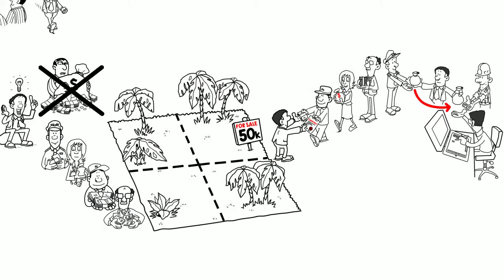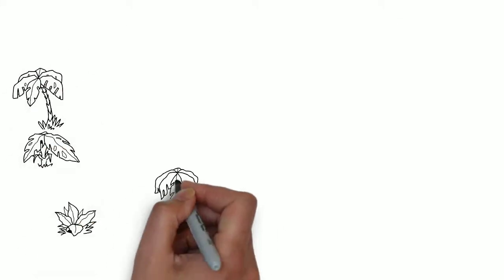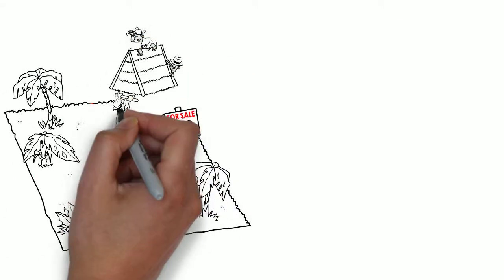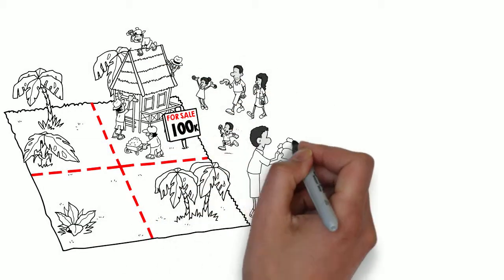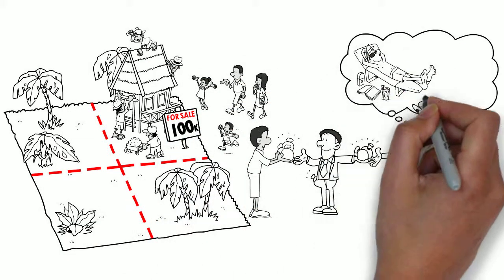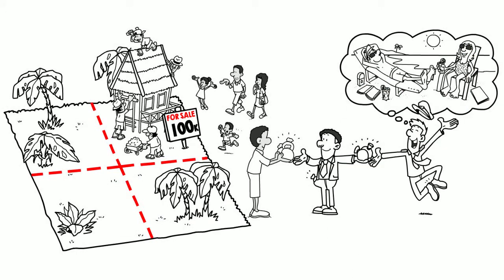So John now has the additional money he needs to build the resort. Now that construction has started, John begins selling plots to the local Brazilians. The plots are now, of course, worth more, which means there is plenty of profit for John and plenty of profit for the investors.